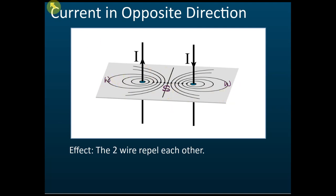Looking at the field pattern, we can see strong field in the middle and weak field at the sides. The same principle applies — a force is produced to move each conductor from the stronger field toward the weaker field. This pushes the two wires away from each other. Therefore, we say the two wires will repel each other when the directions of the currents are opposite.